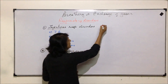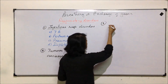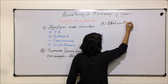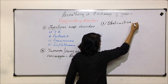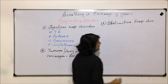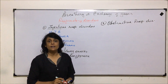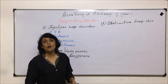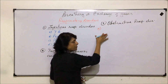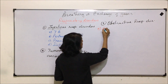The third category of respiratory disorders is called obstructive respiratory disorders, in which we talk about allergies, bronchitis, asthma, emphysema, and more. We will take each of these one by one in detail. The first one is allergies.